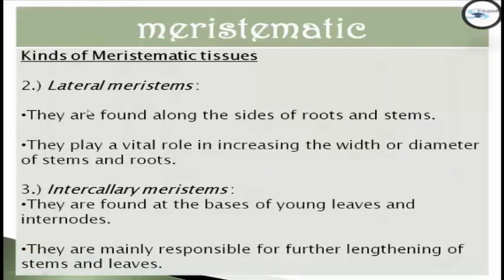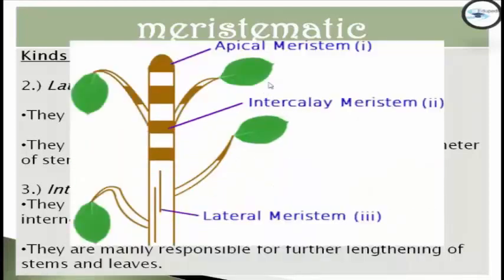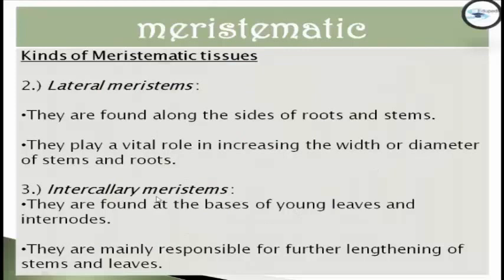The second kind of meristematic tissue is the lateral meristems, which is found along the sides of roots and stems. They play a vital role in increasing the width or diameter of stems and roots. The last kind is the intercalary meristem, which is found at the base of young leaves and internodes, and they are mainly responsible for further lengthening of stems and roots.